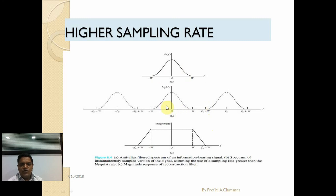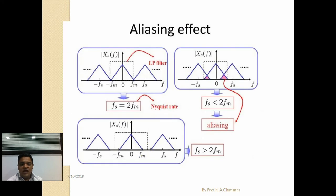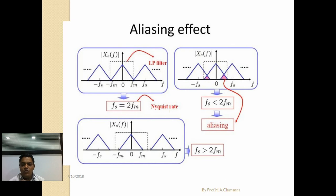The magnitude response of the reconstruction filter becomes: W, (fs minus W) on the positive side, and minus W, (minus fs plus W) on the negative side. In the aliasing effect, there are two spectra, and these are the low-pass filter outputs. When they overlap, aliasing occurs. According to the Nyquist rate, the sampling frequency should be twice that of the modulating frequency.